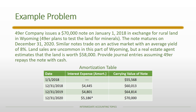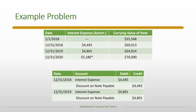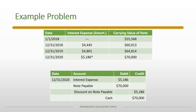We recreate the amortization table — again, no payments, so we only track interest expense and amortization of the discount. For 12/31/2018, interest expense is $4,445, with the same amount credited to the discount on note payable. The same entry applies for 12/31/2019, using updated amounts from the amortization table. The final journal entry on 12/31/2020 records both the last period's interest expense and the repayment of the $70,000 face value of the note.